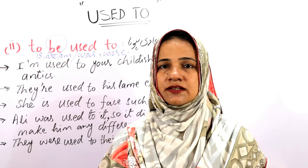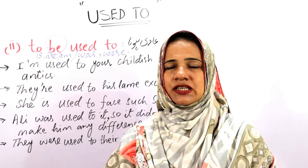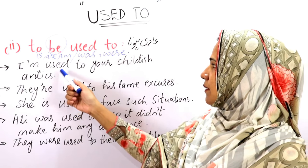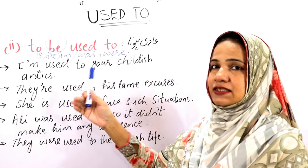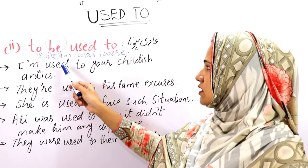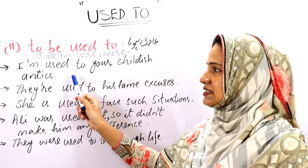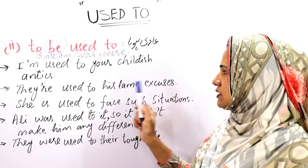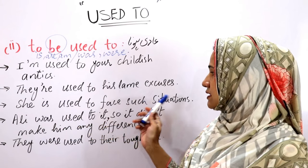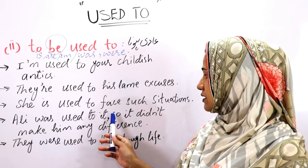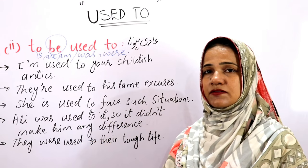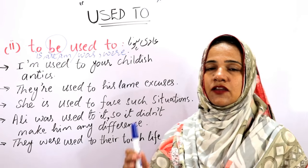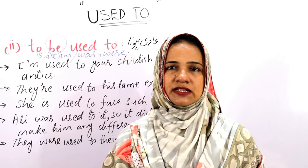These sentences were assertive or positive. We can change them into negative form as well. 'I am not used to your childish antics.' 'They are not used to his lame excuses.' 'She is not used to facing such situations.' 'Ali was not used to it, so it didn't make any difference.' 'They were not used to their tough life.'